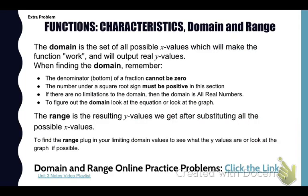Now let's talk about function characteristics, domain, and range. The domain is the set of all possible x values which make the function work. We'll give you real y values for the output. When you're finding the domain, here are some things to remember. The denominator cannot be zero. A number under a square root cannot be negative. It has to be zero or positive. If there are no limitations to the domain, then the domain is all real numbers.